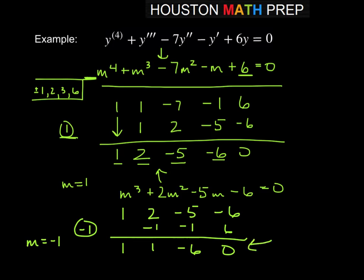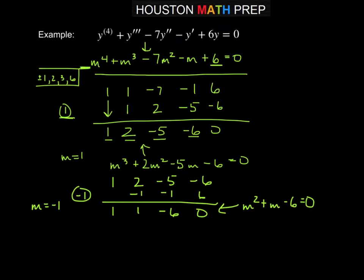the 1, 1, negative 6 tells us m squared plus m minus 6 equals 0. And then most of you from there can probably factor at that point without having to do much more synthetic. So here this would tell us m plus 3 times m minus 2 equals 0. And so we would get m is equal to negative 3. m is equal to positive 2.